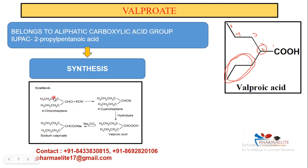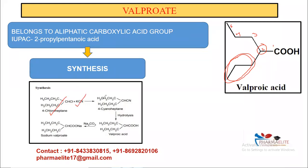For synthesis: start with 4-chloroheptane — a seven-carbon chain with chloro at position four. React with potassium cyanide to get 4-cyanoheptane. After that, acid hydrolysis converts the CN group to an acid, and then reaction with sodium carbonate gives sodium valproate. That's the synthesis.